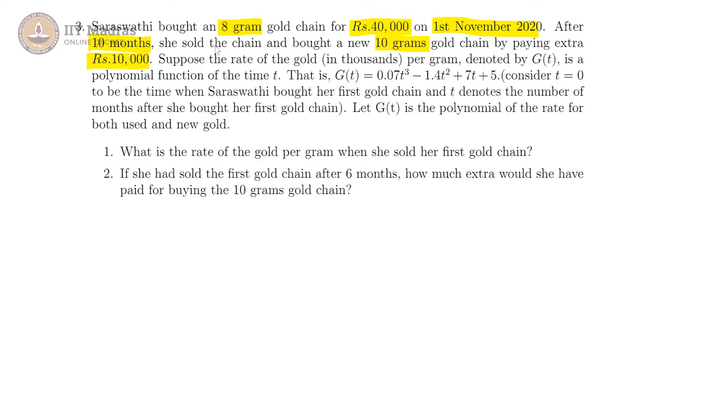Suppose the rate of the gold per gram is denoted by g of t. And it is a function of time, g of t is given to be this cubic polynomial here, and we are taking t to be 0 at the time when Saraswati bought her first gold chain.